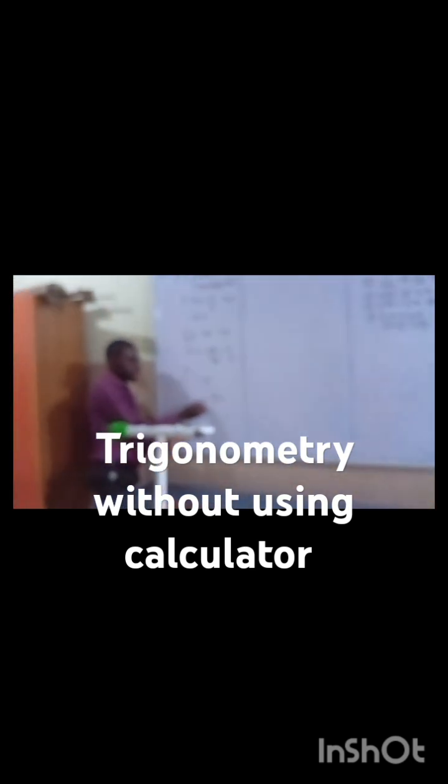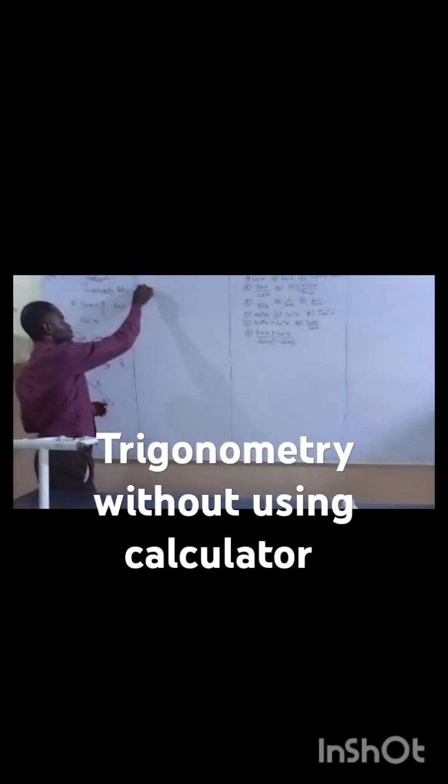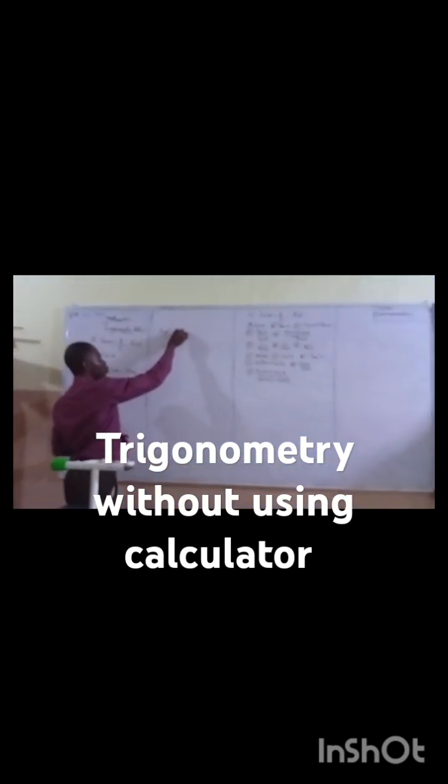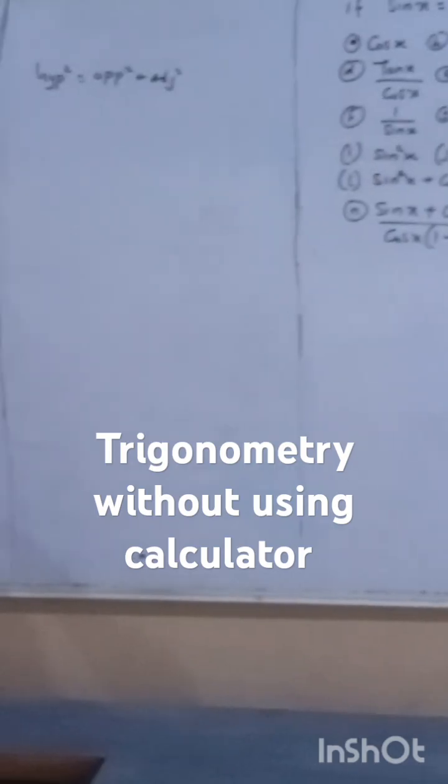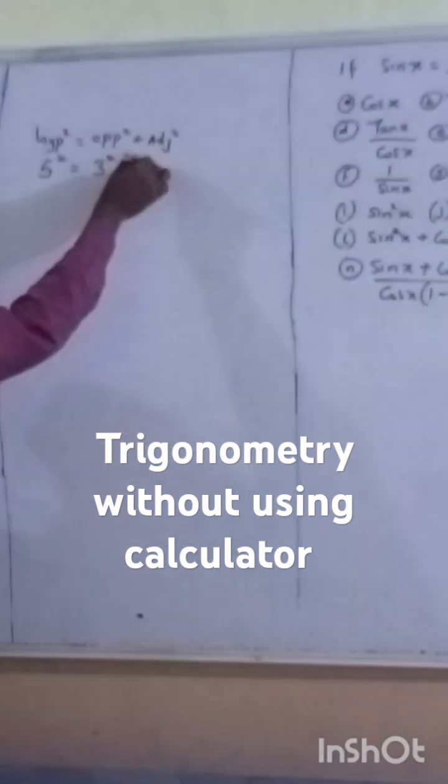Using Pythagoras theorem: hypotenuse squared equals opposite squared plus adjacent squared. So 5 squared equals 3 squared plus A squared.